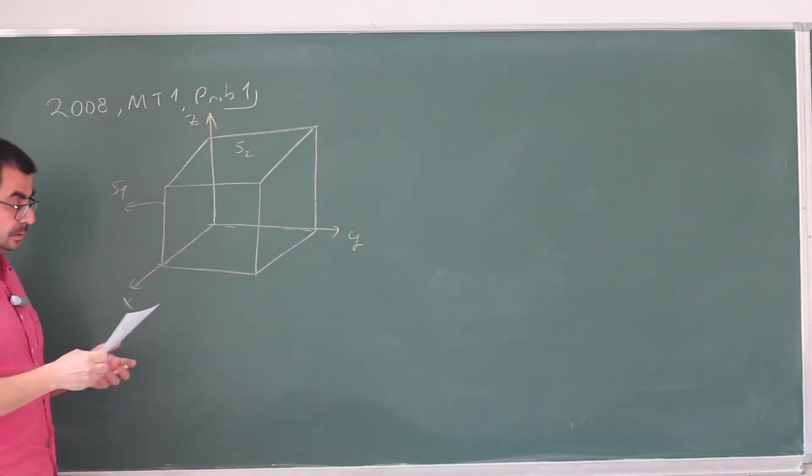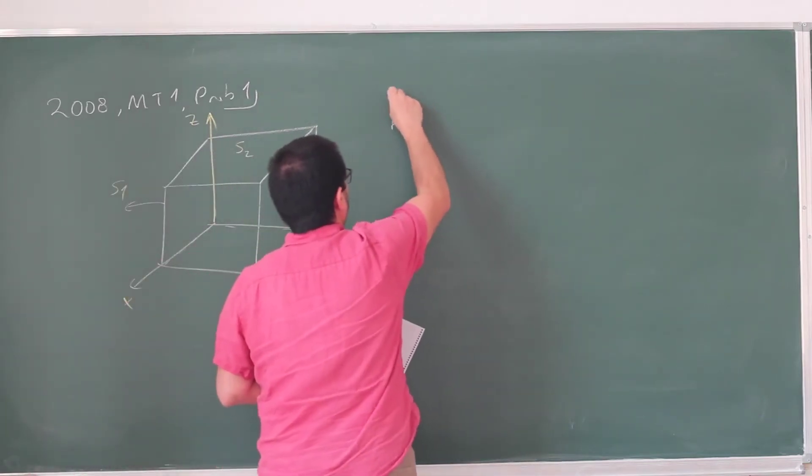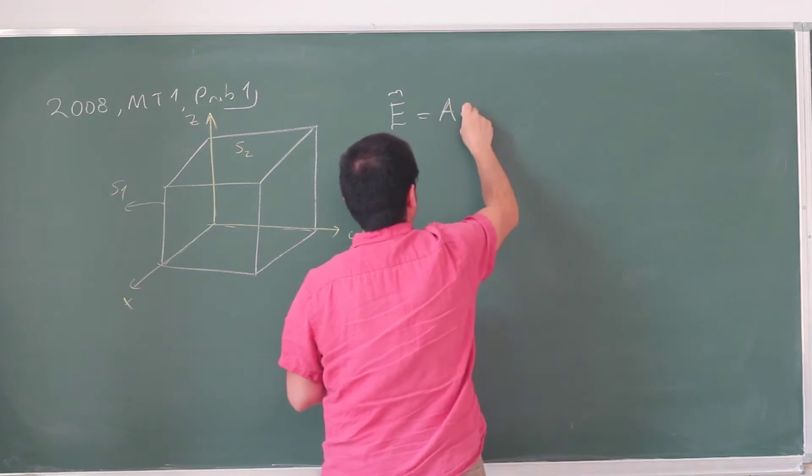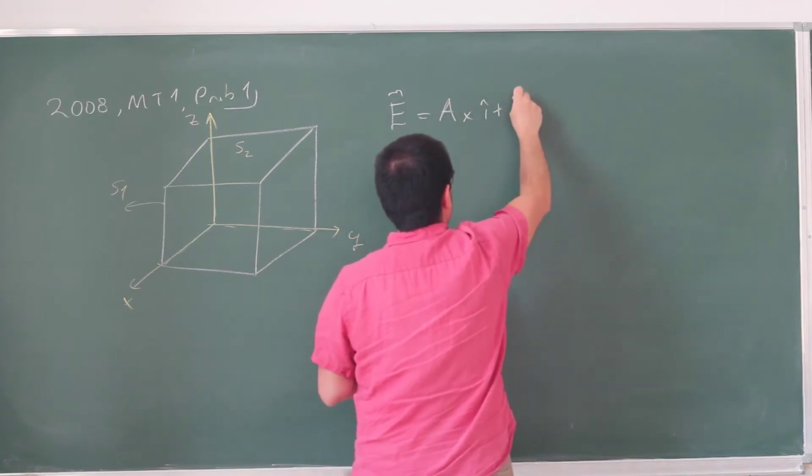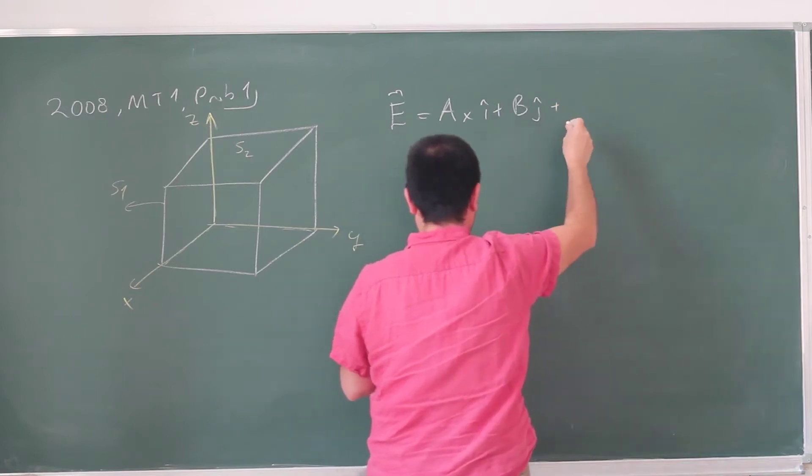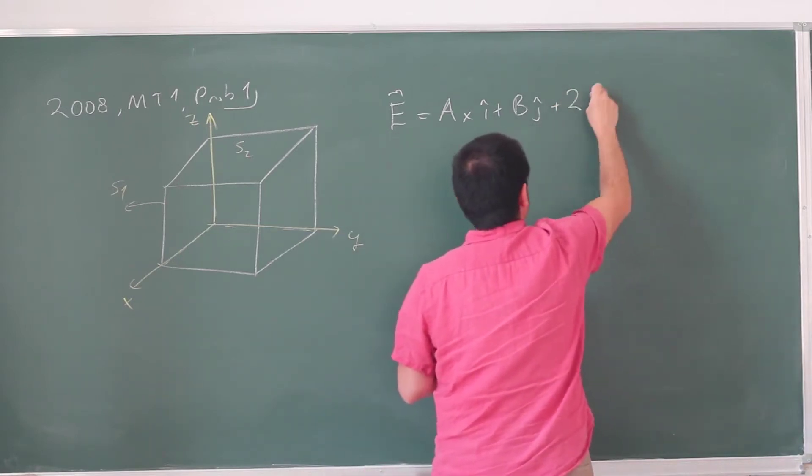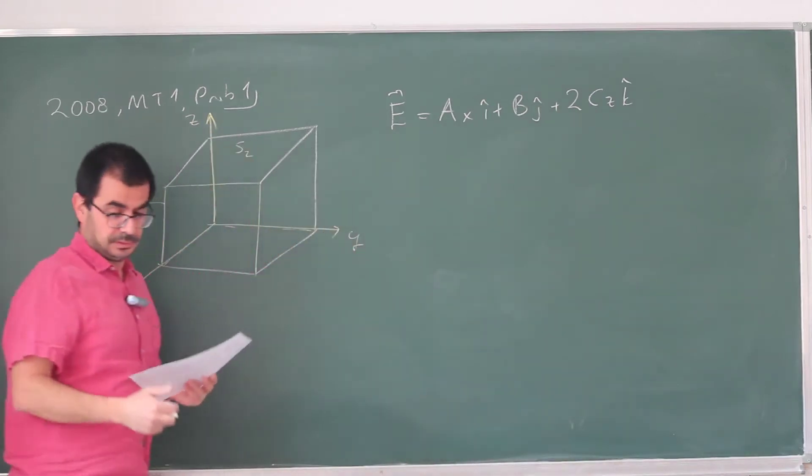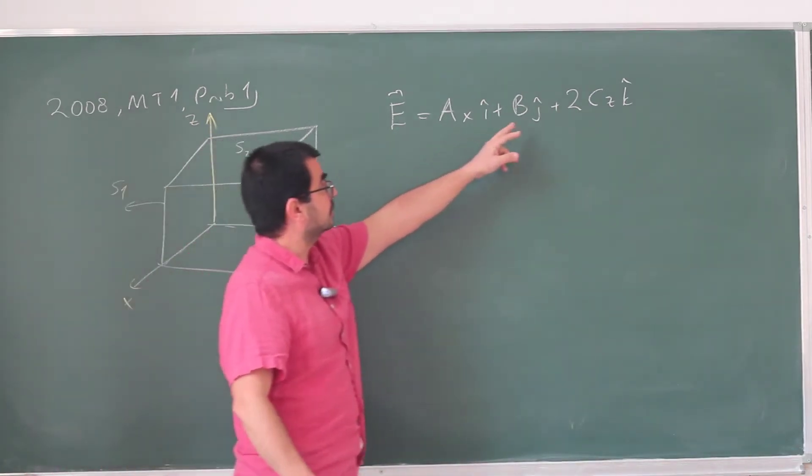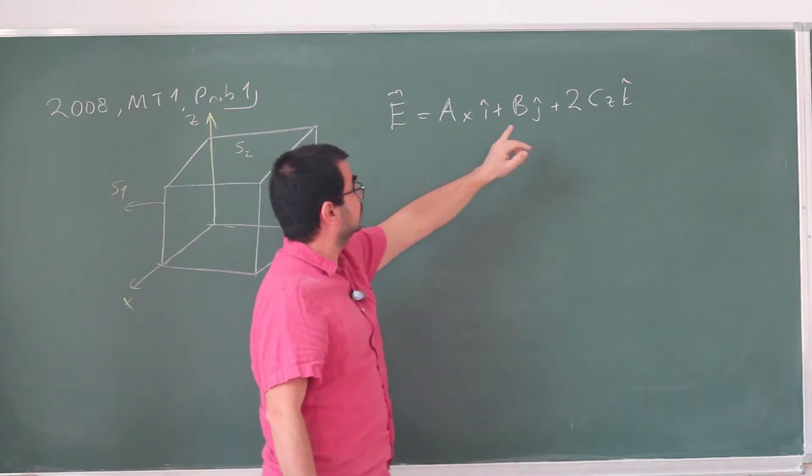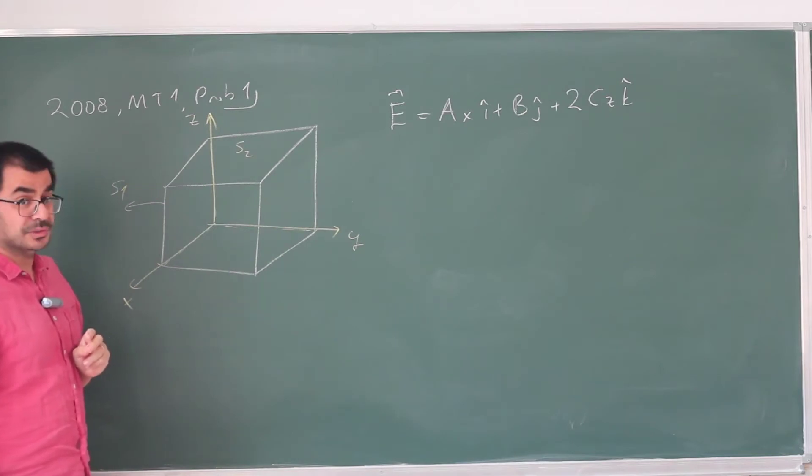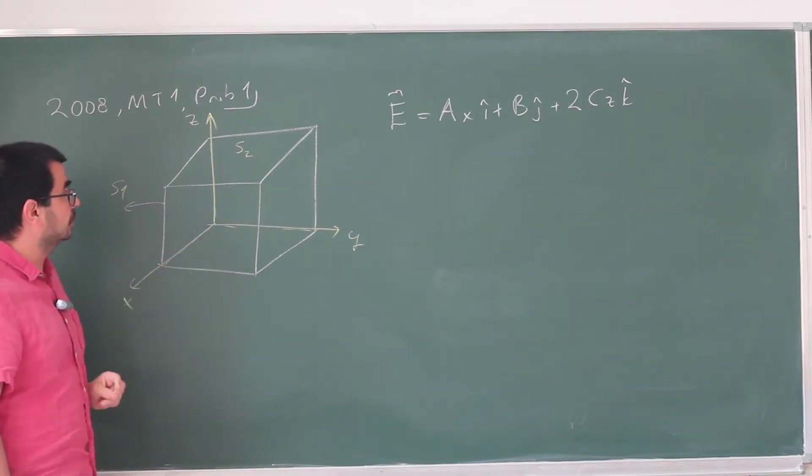And they give you some electric field. The electric field is Ax i-hat plus B j-hat plus 2Cz k-hat. This is an electric field where the y component is constant, whereas the x and z components are linearly proportional to the distance from the origin.